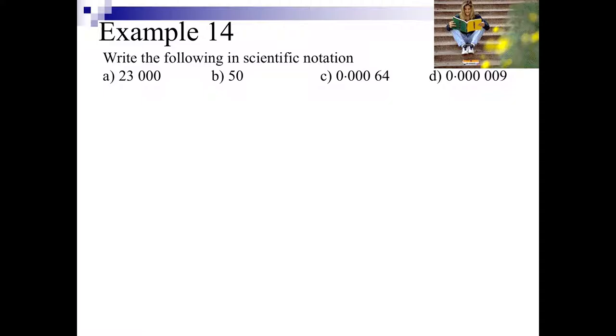So let's have a look at the following examples. So 23,000, the decimal place will go after the 2, that gives us 2.3. Now that decimal place has moved 1, 2, 3, 4 places, so we're going to multiply that by 10 to the power of 4.